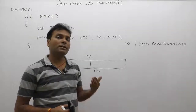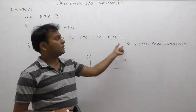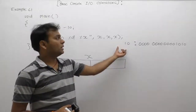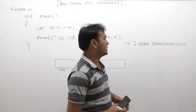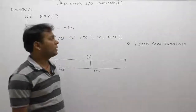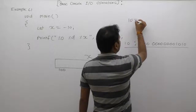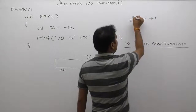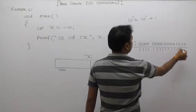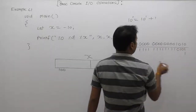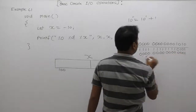We require the binary number of minus 10, not plus 10. As we know, to convert any positive number to its negative binary representation, the binary number of any positive number is equivalent to its two's complement. Two's complement is nothing but the ones complement plus 1. First of all, we are calculating the ones complement of 10, then adding 1.